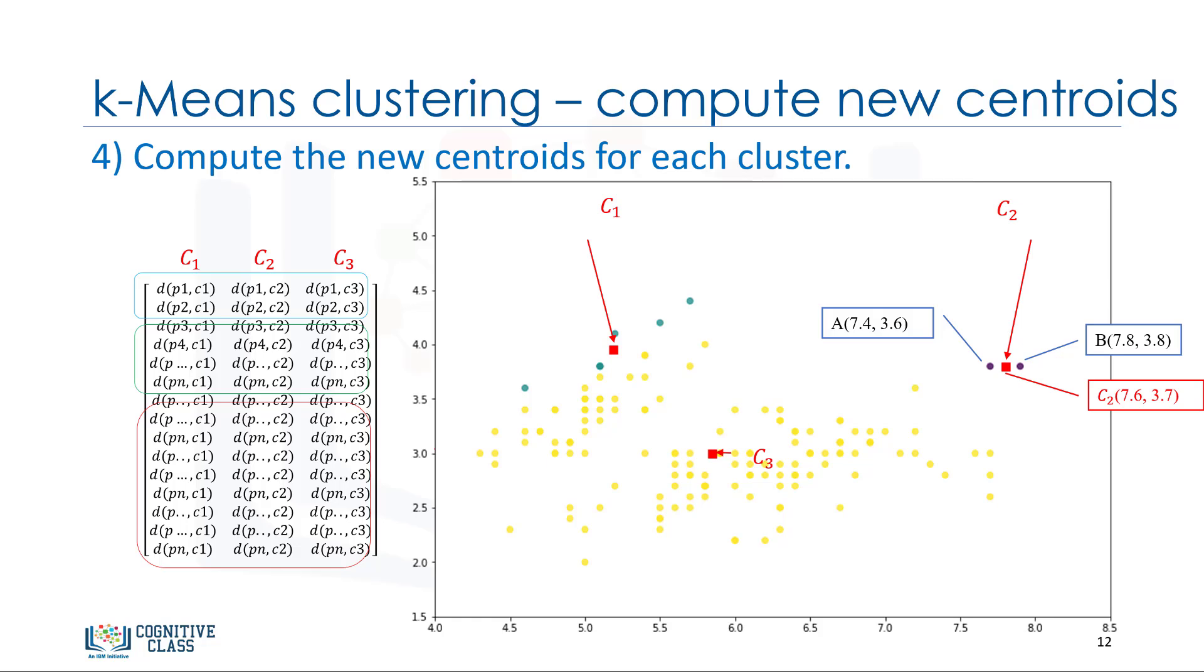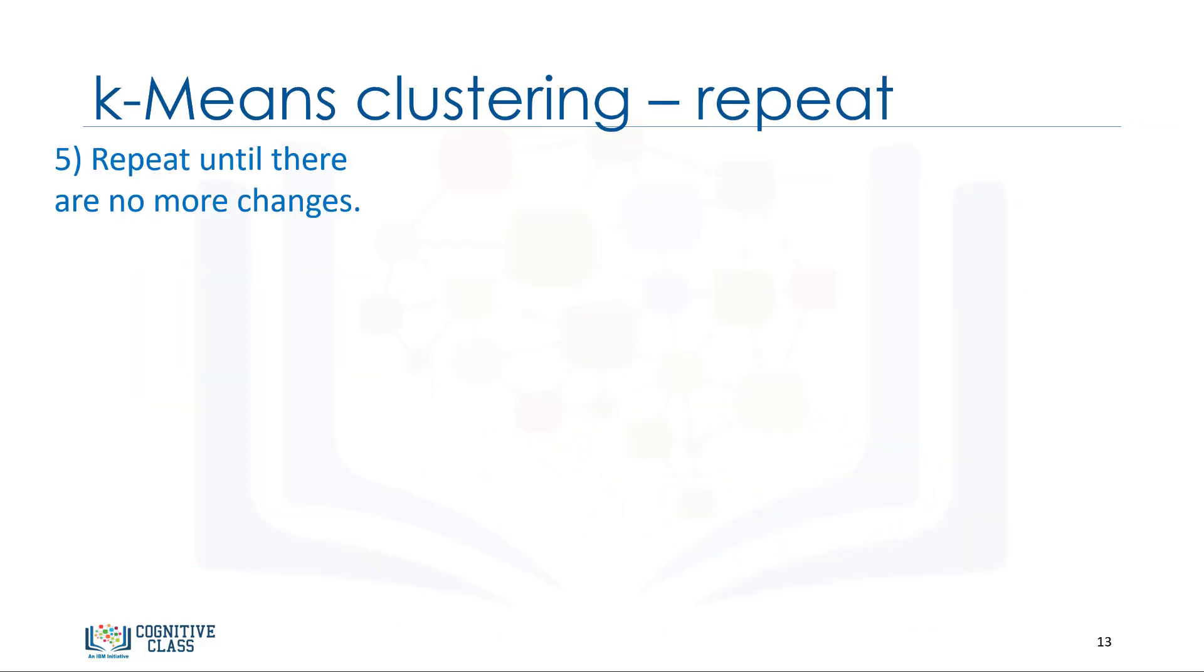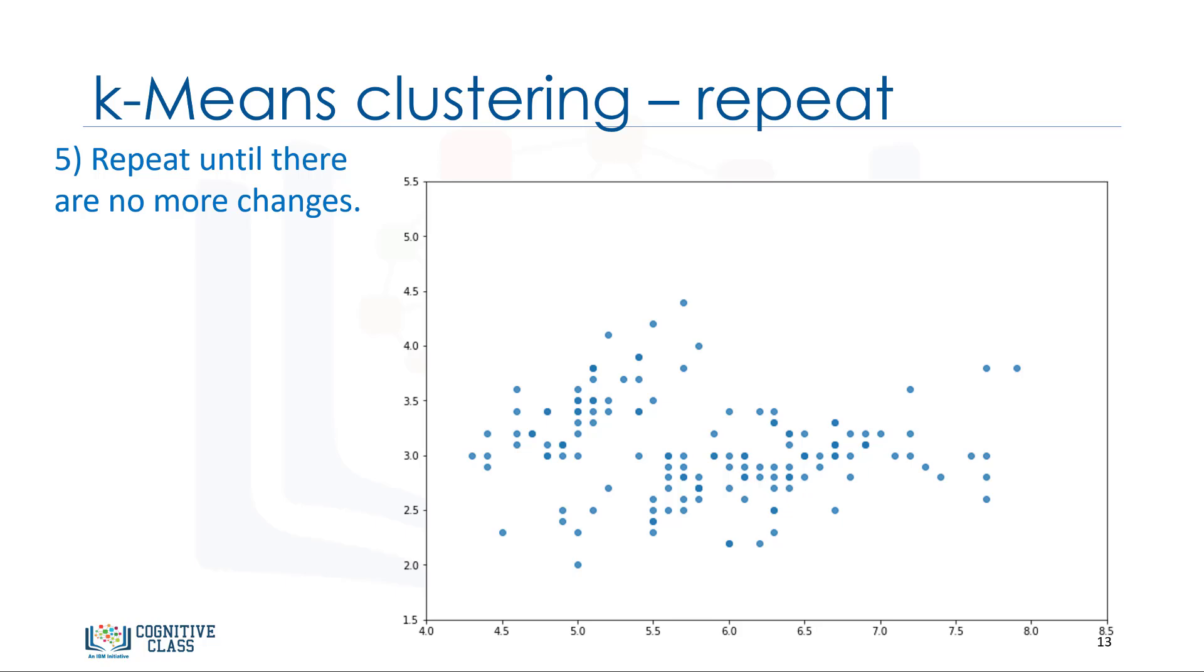Please note that whenever a centroid moves, each point's distance to the centroid needs to be measured again. Yes, k-means is an iterative algorithm, and we have to repeat steps 2 to 4 until the algorithm converges. In each iteration, it will move the centroids, calculate the distances from new centroids, and assign data points to the nearest centroid. It results in the clusters with minimum error or the most dense clusters.